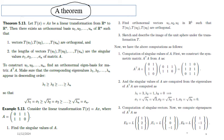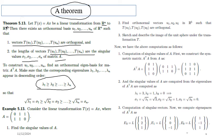We now state the theorem: Consider T as a linear transformation from Rn to Rm. Then there exists an orthonormal basis U1, U2 up to Un of Rn such that the corresponding images are orthogonal, and the lengths of those images equal the singular values of the rectangular matrix A. The singular values appear in decreasing order — the first is the largest, then second, third, and so on — because the eigenvalues of symmetric product matrices are ordered this way.